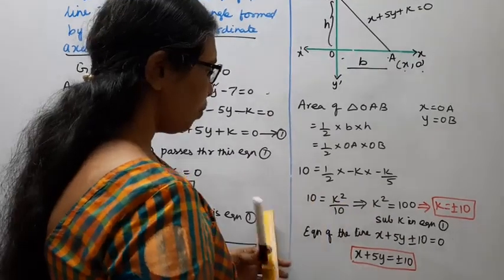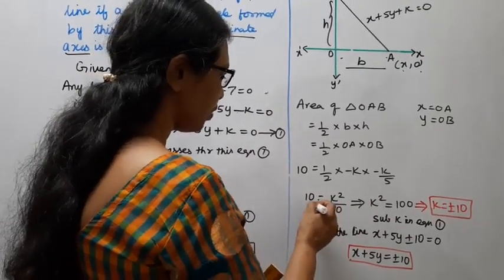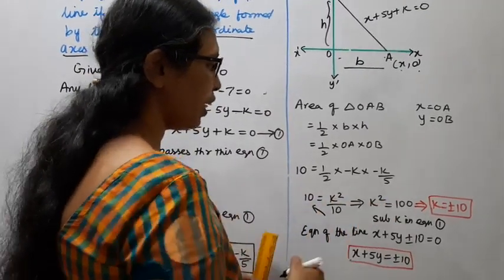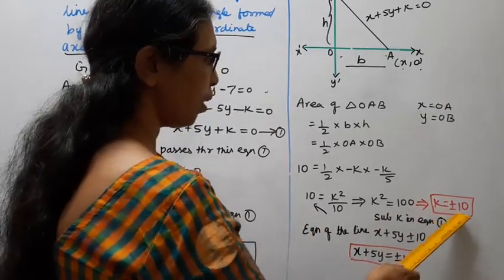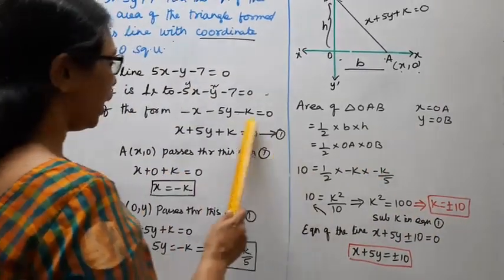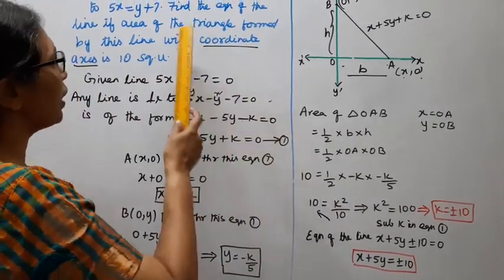The area of the triangle OAB equals 10 square units. Cross multiplying gives k² = 100, so k = ±10. Substituting this k value back into the equation.